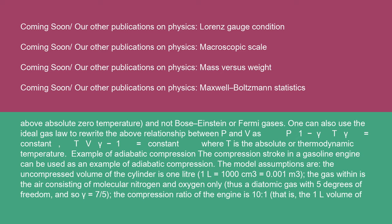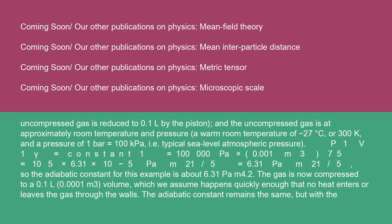Example of adiabatic compression: the compression stroke in a gasoline engine. The model assumptions are: the uncompressed volume of the cylinder is one liter (1 L = 1000 cm³ = 0.001 m³); the gas within is air consisting of molecular nitrogen and oxygen only — a diatomic gas with five degrees of freedom, so γ = 7/5; the compression ratio of the engine is 10 to 1 (the 1 L volume is reduced to 0.1 L by the piston); and the uncompressed gas is at approximately room temperature (27°C, or 300 K) and a pressure of 1 bar (100 kPa), i.e., typical sea-level atmospheric pressure.